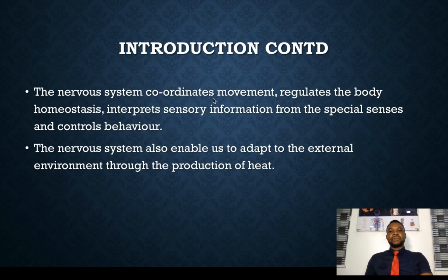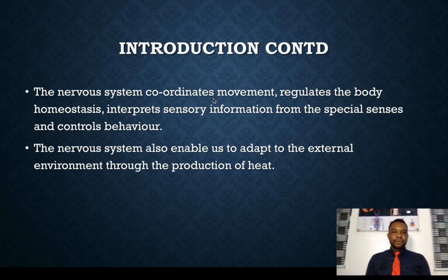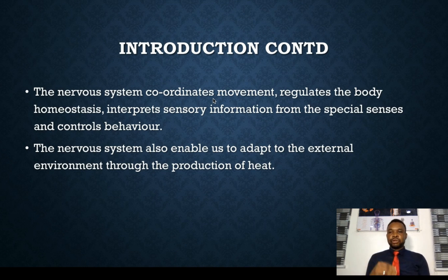So the nervous system coordinates movement, regulates the body's homeostasis, interprets sensory information from special senses, and controls behavior. So our behavior is like an output of what is input into the brain. The nervous system also enables us to adapt to the external environment through production of heat to the body.